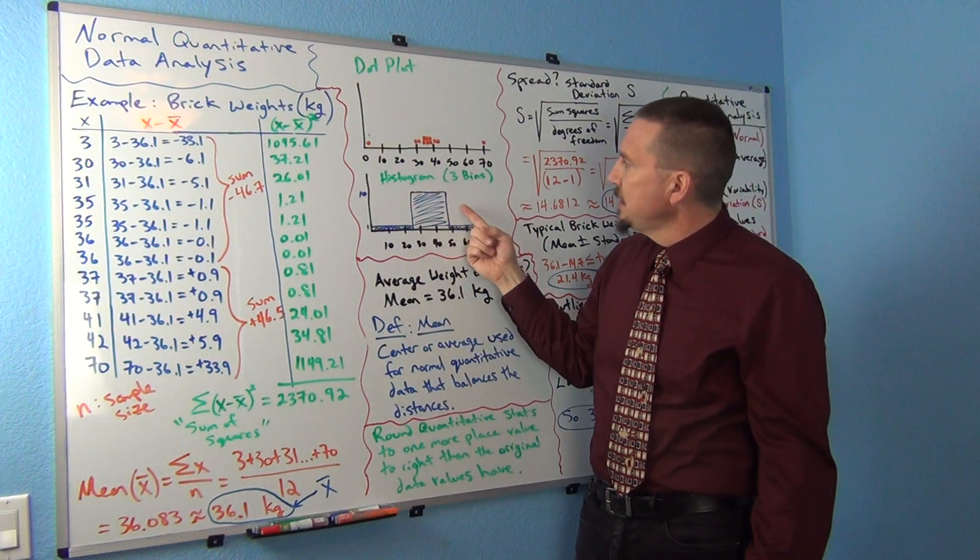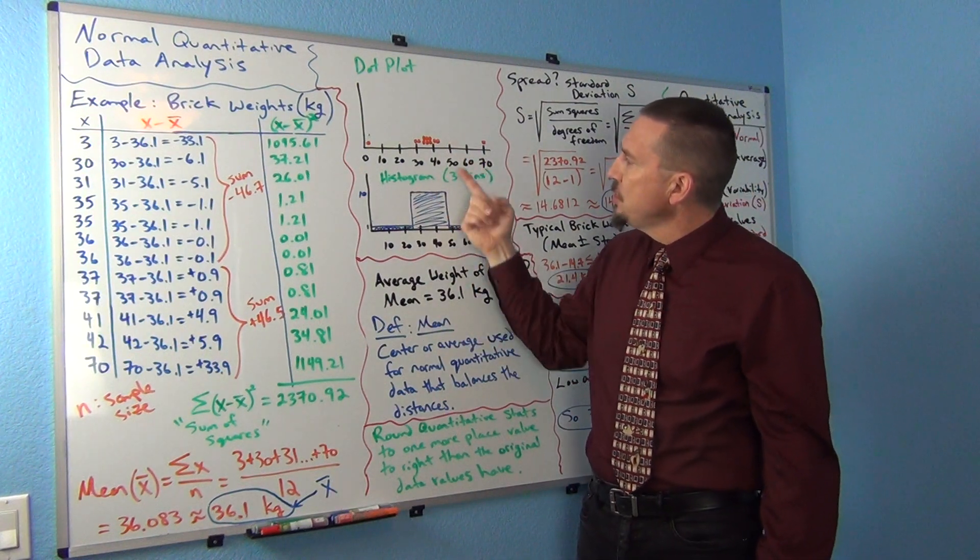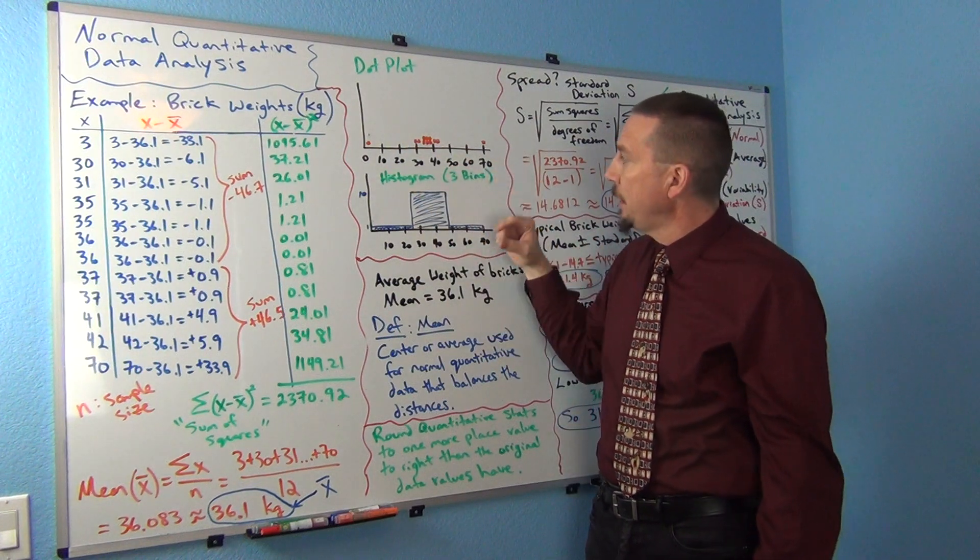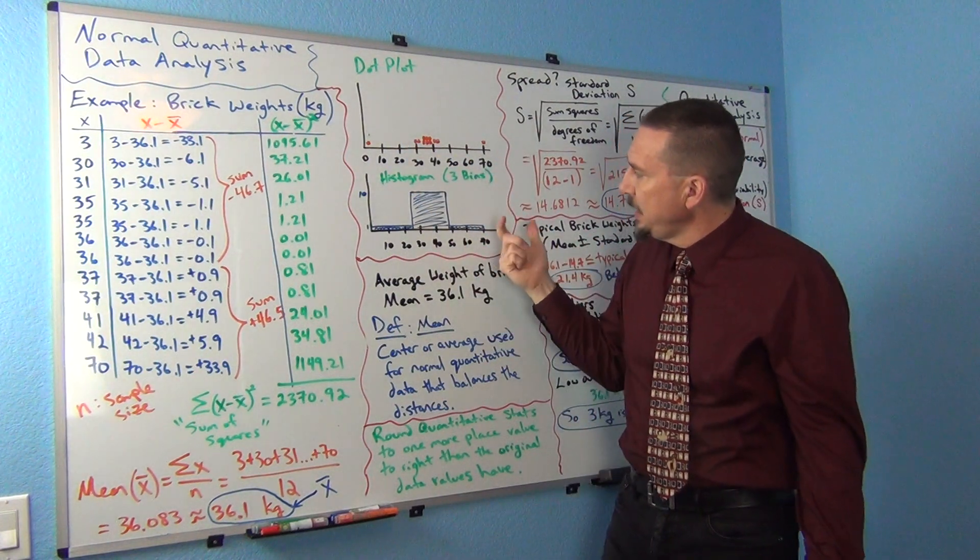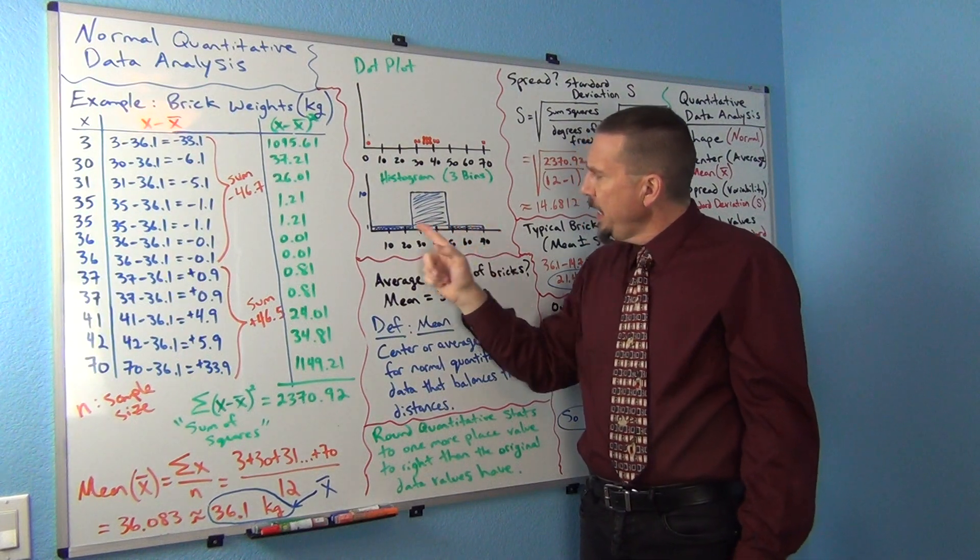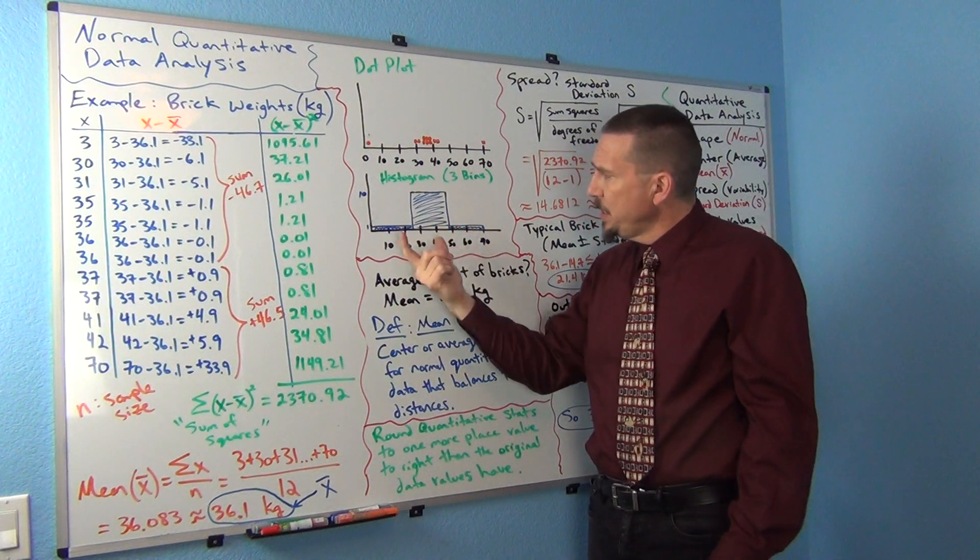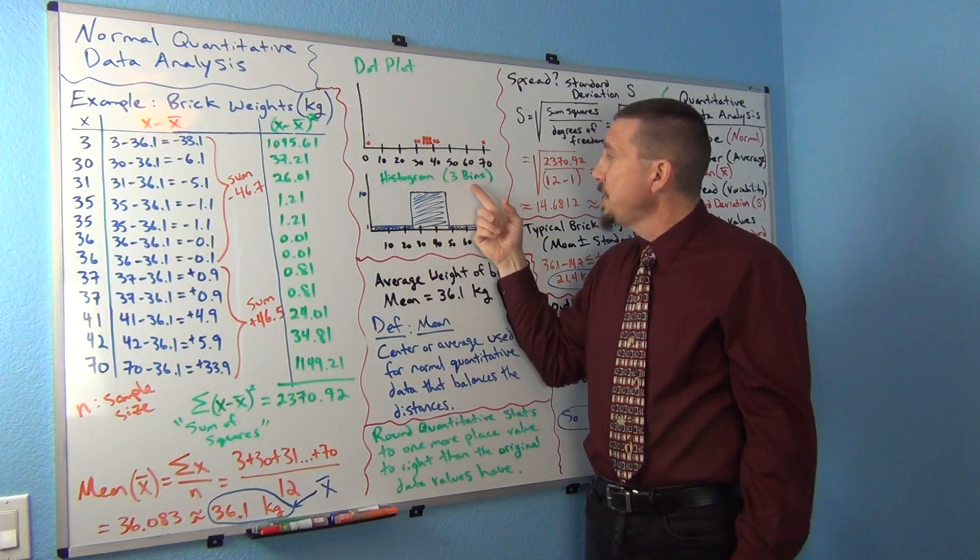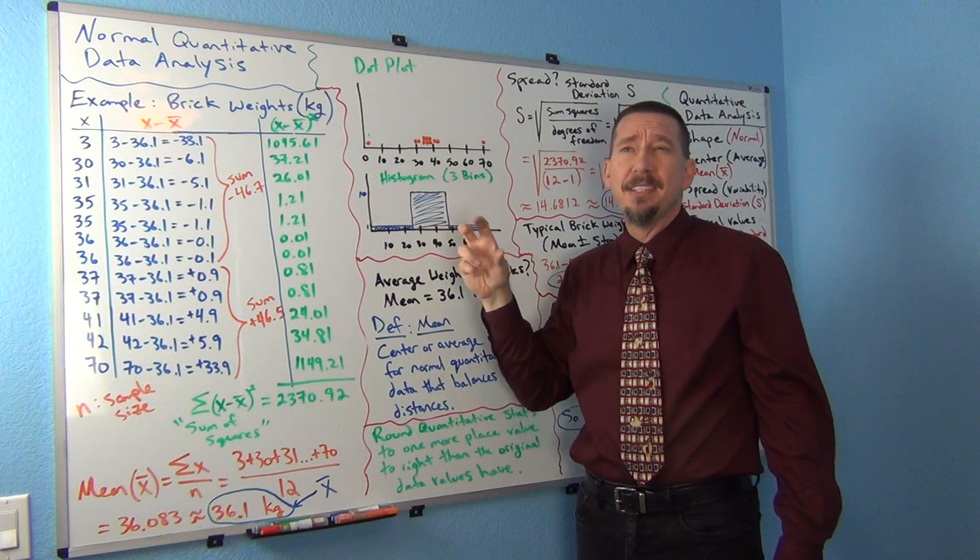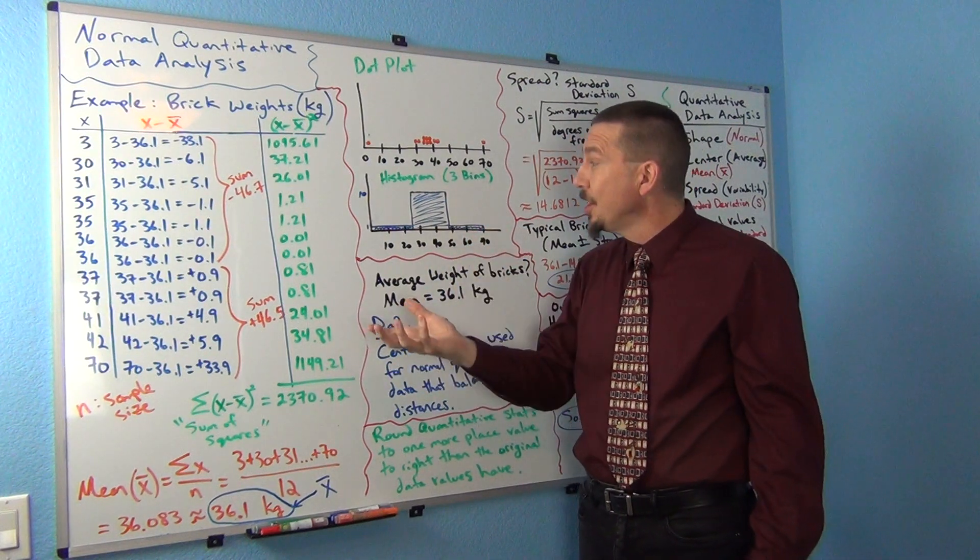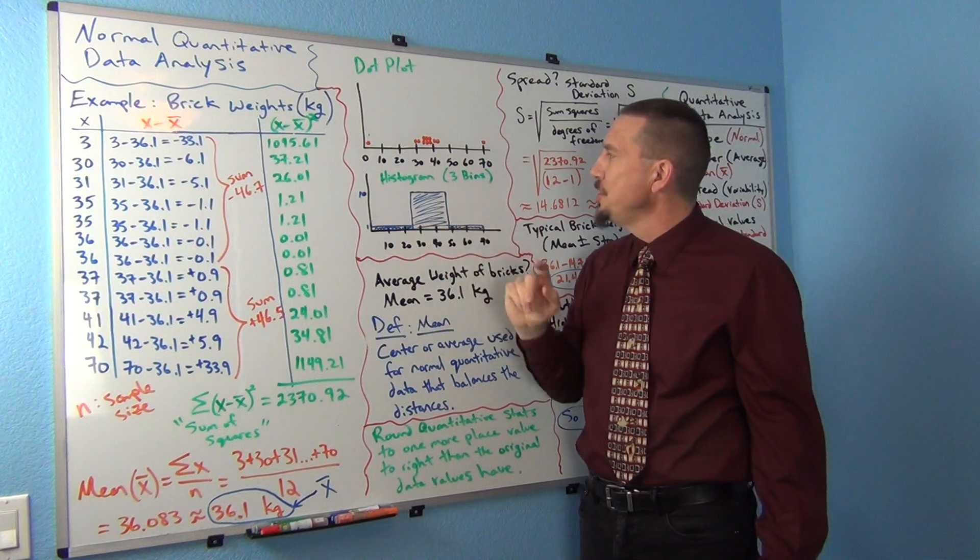The way you want to think about a histogram is it's connected to the dot plot. It's just counting how many dots are in certain areas of the graph. I broke this up into sort of three sections, three bins, as some stat books would call it. Or sometimes in stat programs you'll see them say three buckets or three bars. It's just how many bars you want.